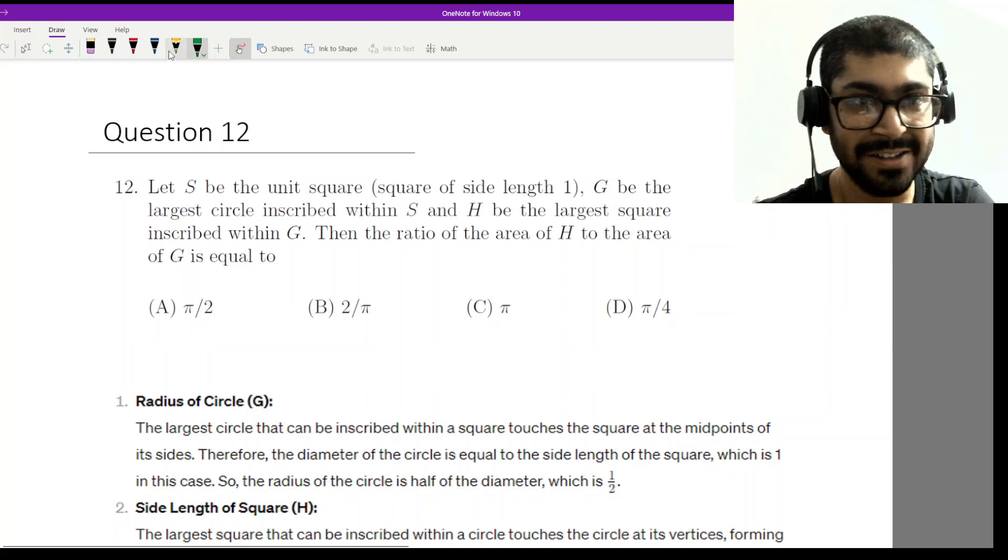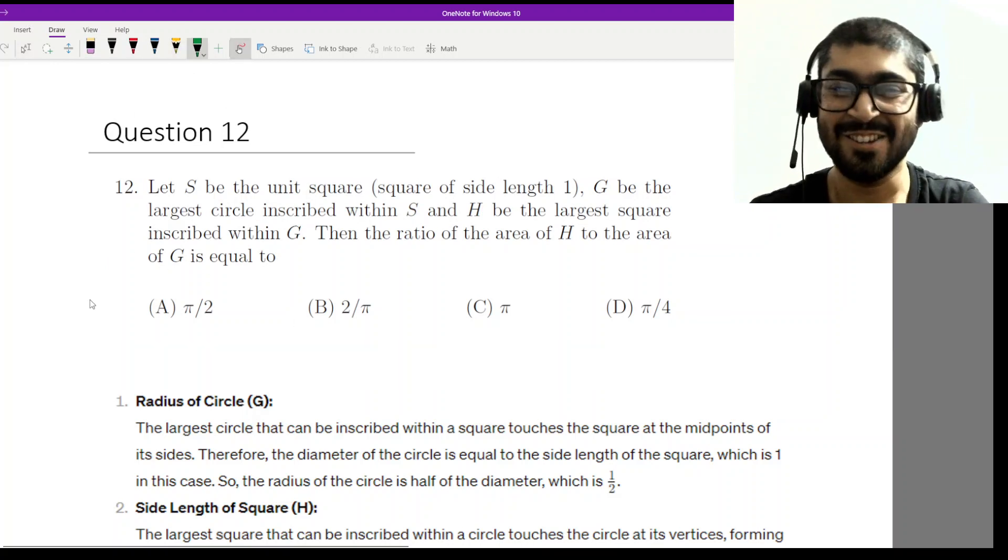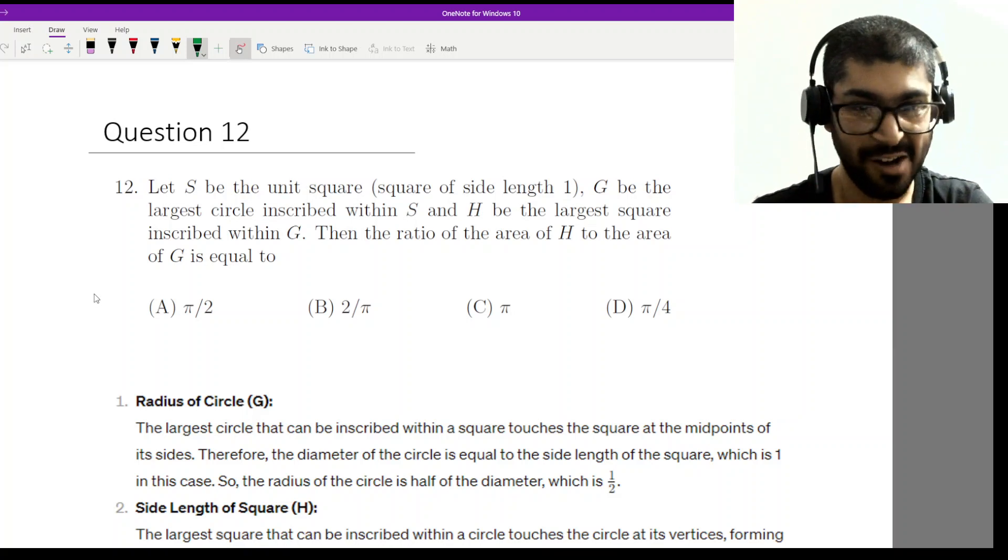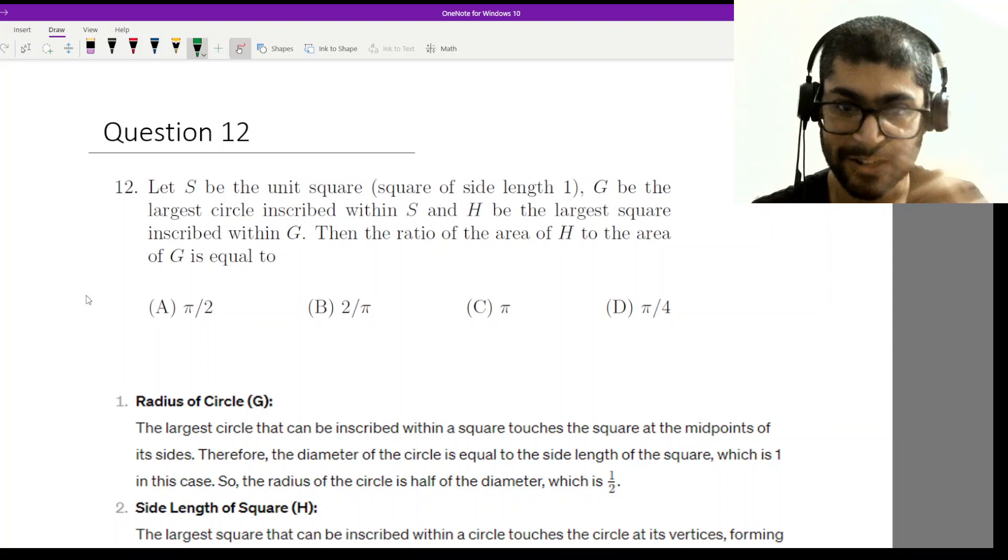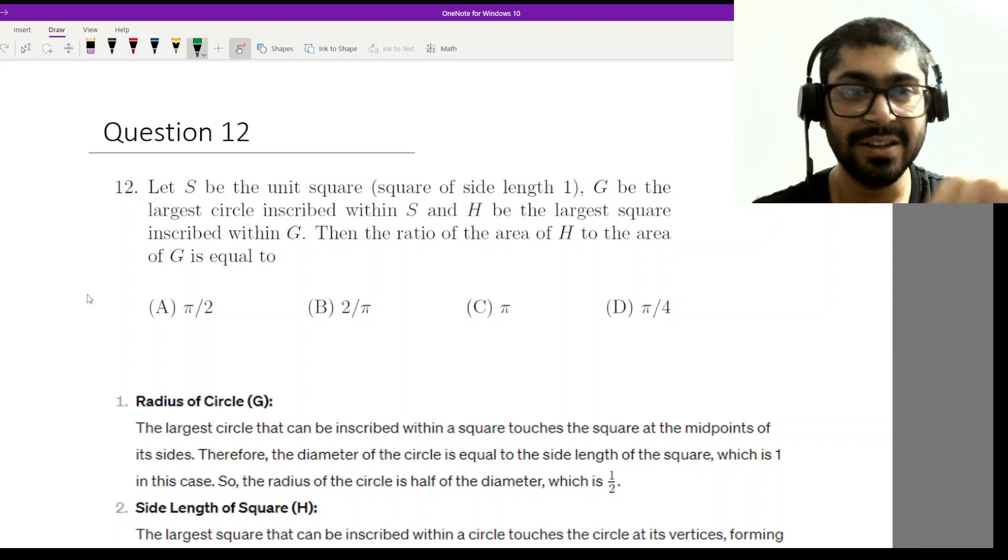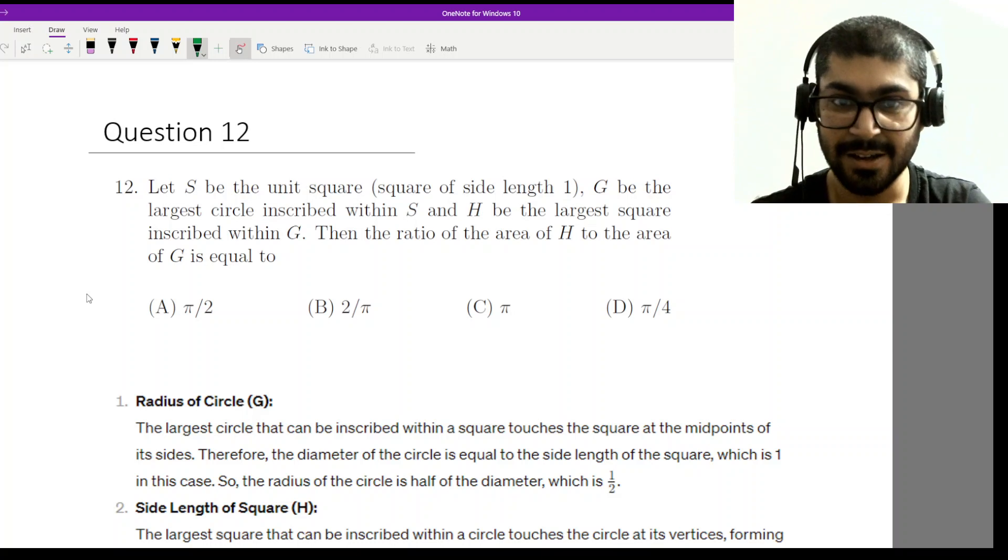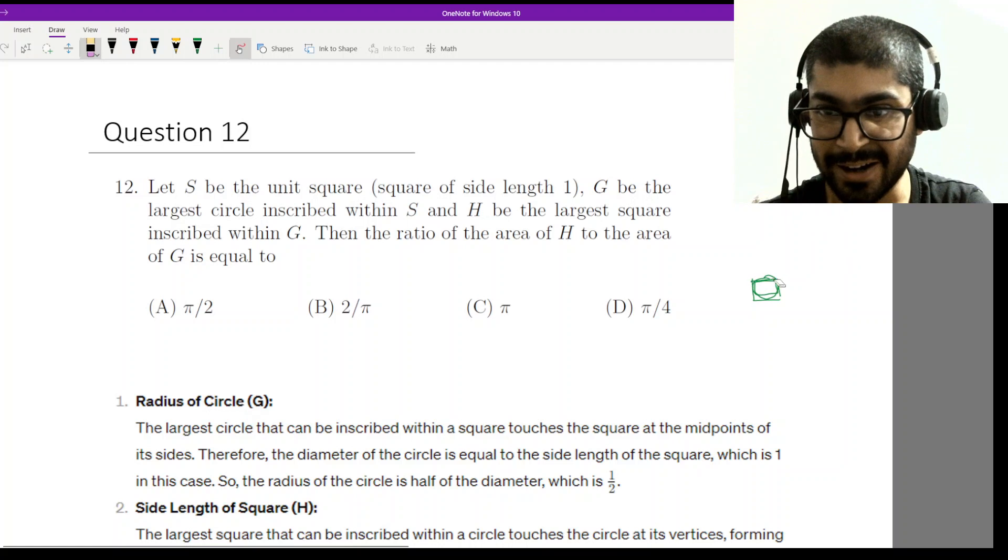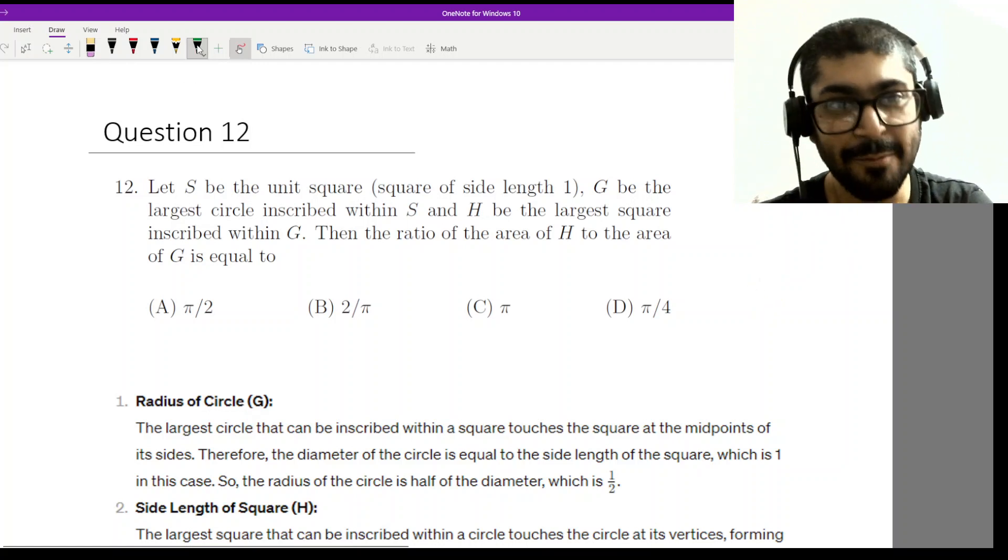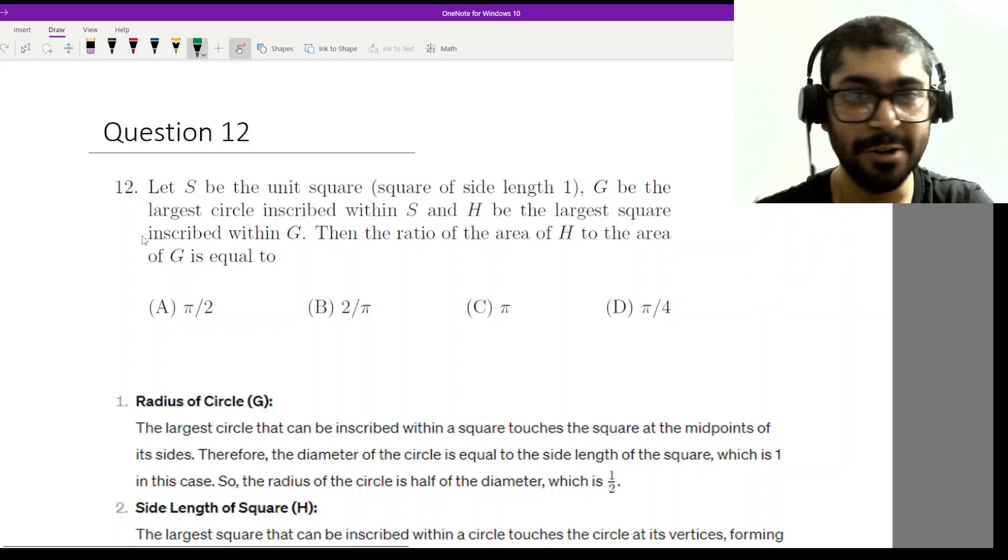Question 12 is actually quite easy, so easy that I found it in a textbook. I will just explain the solution I have already noted down. The question states: let S be the unit square of side length 1, G be the largest circle inscribed within S, and H be the largest square inscribed within G. So you have a unit square, you put a circle inside it, then you put another square inside of that. The concept is so simple that you probably do not need to draw a diagram.